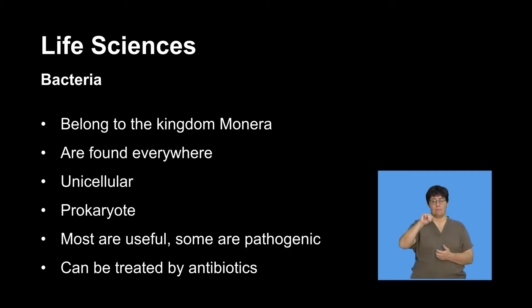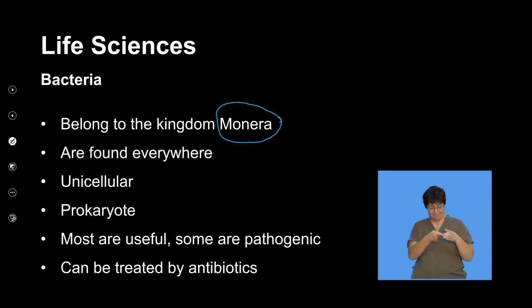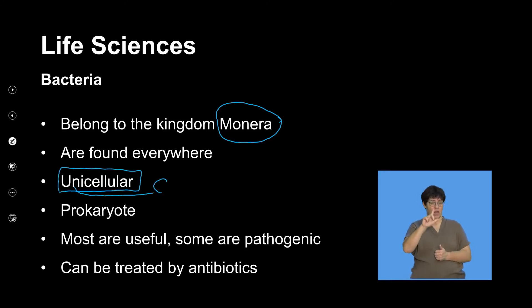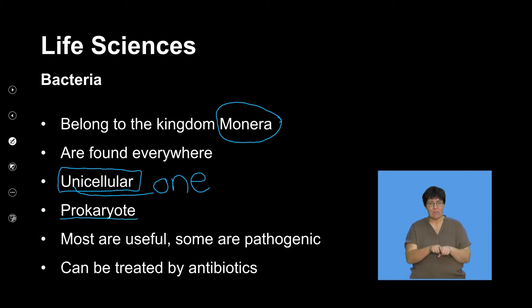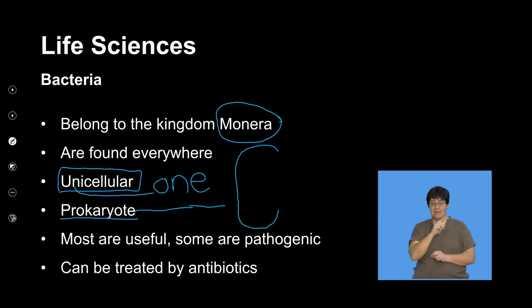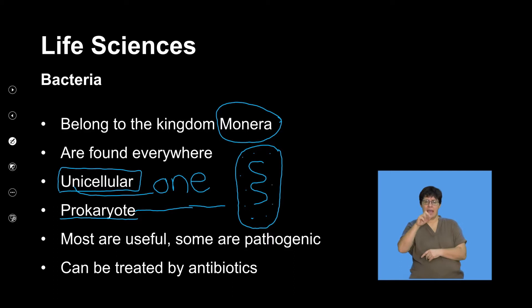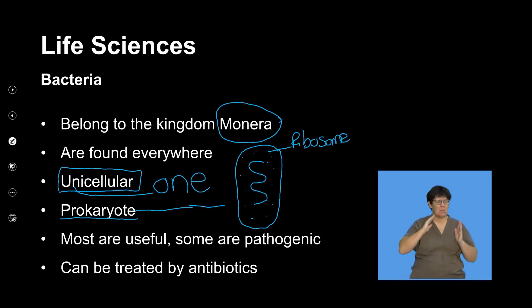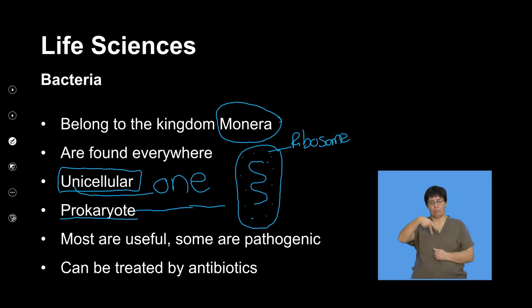If you belong to the Kingdom Monera, there are a few key words to remember. They are unicellular — unicellular means one cell. When we look at the structure, bacteria are only one cell. They are also the only cells that are prokaryotic. A prokaryotic cell is a single cell that has DNA in the middle and has no nuclear-bound structure. It will have a ribosome, but it won't have a Golgi body, nuclear membrane, or mitochondria. That's what prokaryotic means.